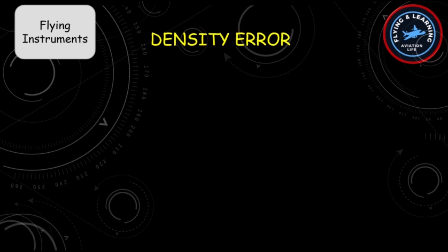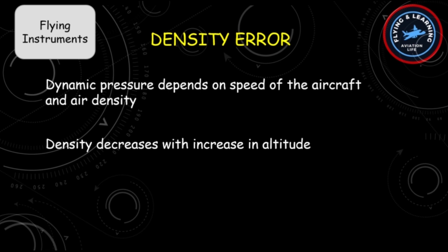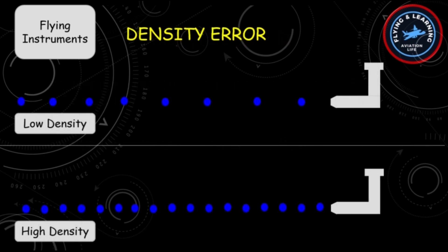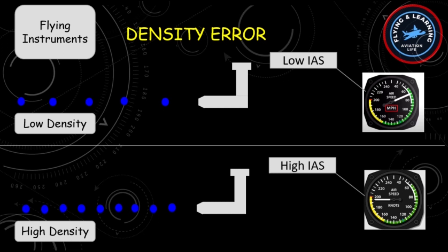Moving to the next type of error: density error. Dynamic pressure depends on the speed of the aircraft and air density. The reading of the airspeed indicator depends on speed and air density. Density decreases with increase in altitude — low density means fewer air molecules, high density means more air molecules. So if an aircraft is flying in low density conditions, fewer air molecules will enter the pitot tube, less dynamic pressure will be read, and the ASI will indicate less airspeed compared to flying in high density conditions.